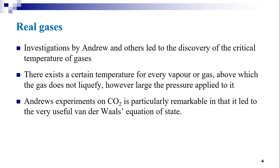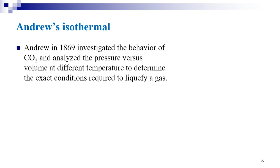The validity of the perfect gas equation PV = RT derived from kinetic theory was tested experimentally with real gases such as hydrogen, nitrogen, and carbon dioxide. Andrews' experiments on carbon dioxide are particularly remarkable in that they led to the very useful Van der Waals equation of state. In 1869, Andrews investigated the behavior of carbon dioxide and analyzed pressure versus volume at different temperatures to determine exact conditions of carbon dioxide.